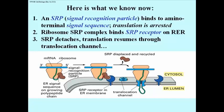It binds to the amino terminal signal sequence, and the result is to arrest any further elongation, any further translation, which makes some sense. You don't want this polypeptide, whose fate it is to go into the RER, to be produced first in the cytosol, because then it would be all folded up and it wouldn't be able to get into the RER.